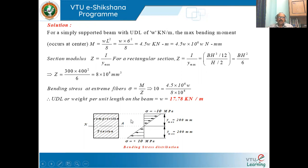To draw the stress distribution for this problem: since it is also a rectangular cross section, the distribution is similar to the previous problem. The top portion is shown under compressive stress and the bottom portion under tensile stress, with linear variation from zero at the neutral axis to maximum at the outer fibers.